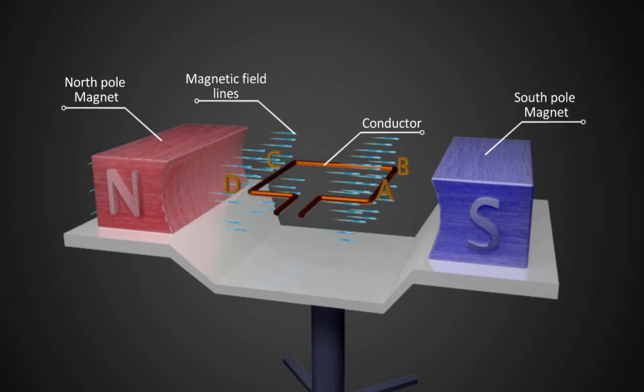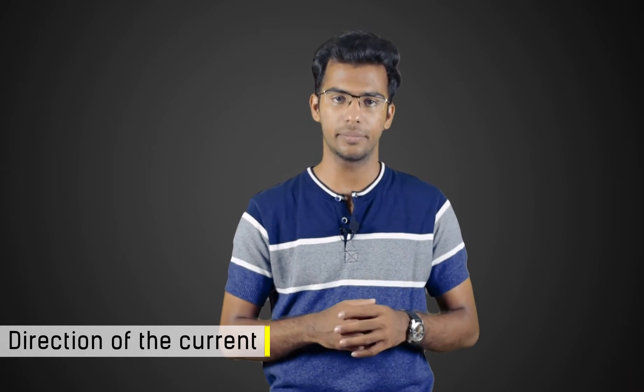In the case of a generator, the conductor will rotate between the magnetic field. This action produces an EMF, and hence the current will flow. This rule will help us find the direction of this current.